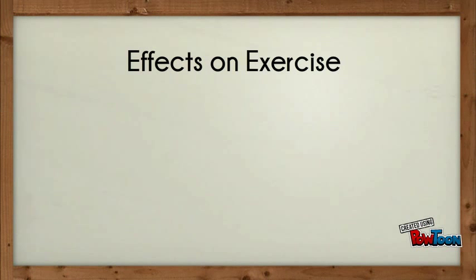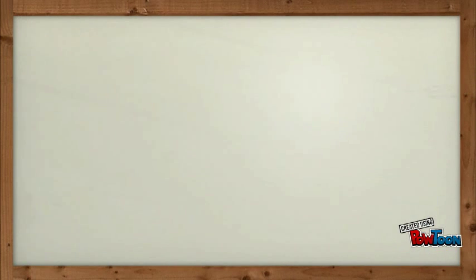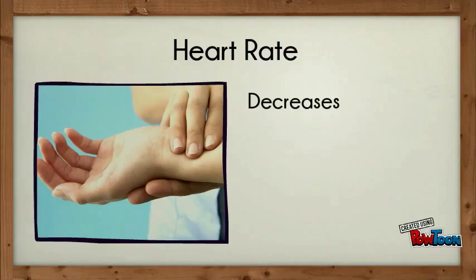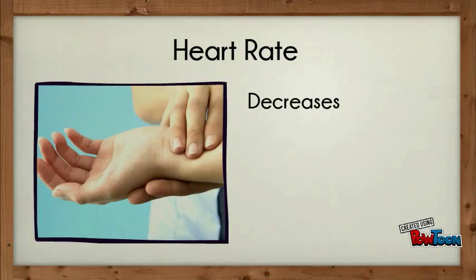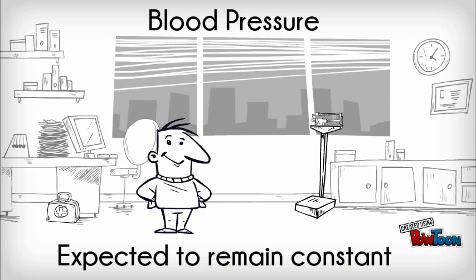Cardiac glycosides will have an effect on exercise. Cardiac output can be expected to remain relatively constant. Heart rate is expected to decrease in patients with atrial fibrillation and possibly decrease in patients with congestive heart failure. Heart rate is not significantly altered in patients with sinus rhythm. Blood pressure can be expected to remain constant at both rest and exercise.